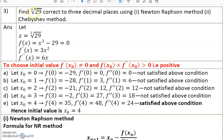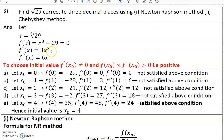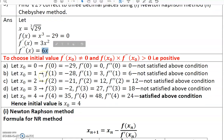So let us assign the unknown value: cube root of 29, so x is equal to the cube root of 29. From this we can form the equation — transferring 29 to the other side gives x³ - 29 = 0. The Newton-Raphson method requires the first and second order derivatives. The first order derivative of x³ - 29 is 3x², and the second order derivative is 6x.